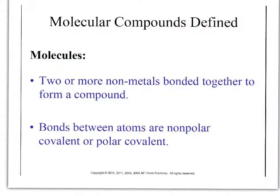Before we get started with Lewis diagrams, a quick definition. A molecule is two or more non-metals bonded together to form a compound. Ionic compounds are not considered molecules because they're just electrostatically attached to each other. The bonds between atoms are non-polar covalent or polar covalent, so long as they're not ionic.